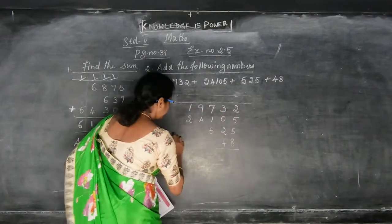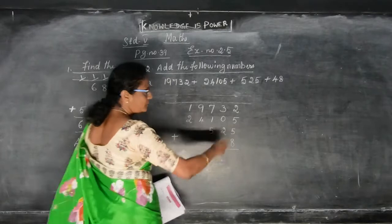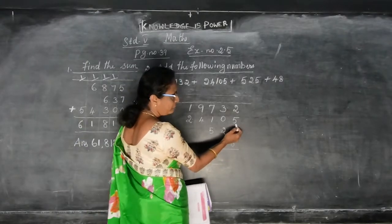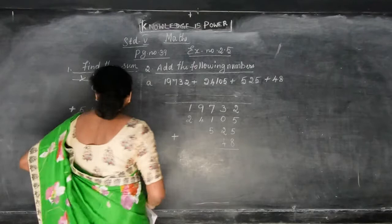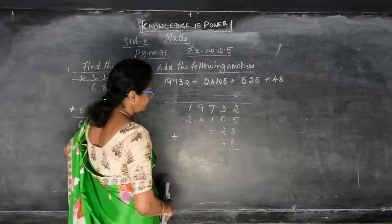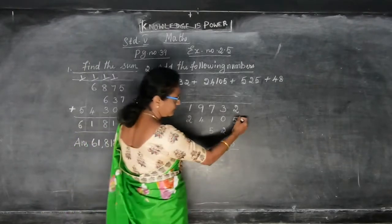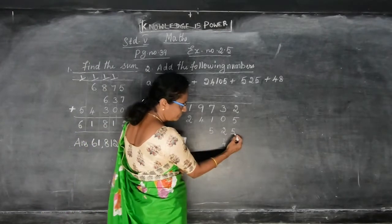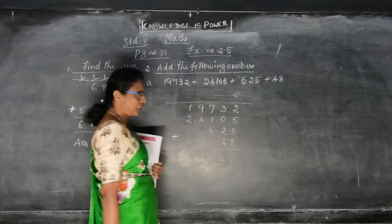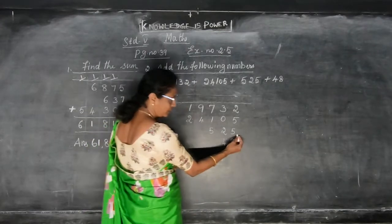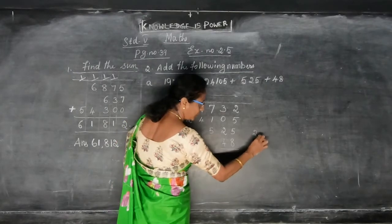Now we can add. 2 in the mind, 5 in the fingers: after 5 — 6, 7. Then 7 in the mind, 5 in the fingers — that gives you 12. 12 in the mind, 8 in the fingers — that gives you 20.